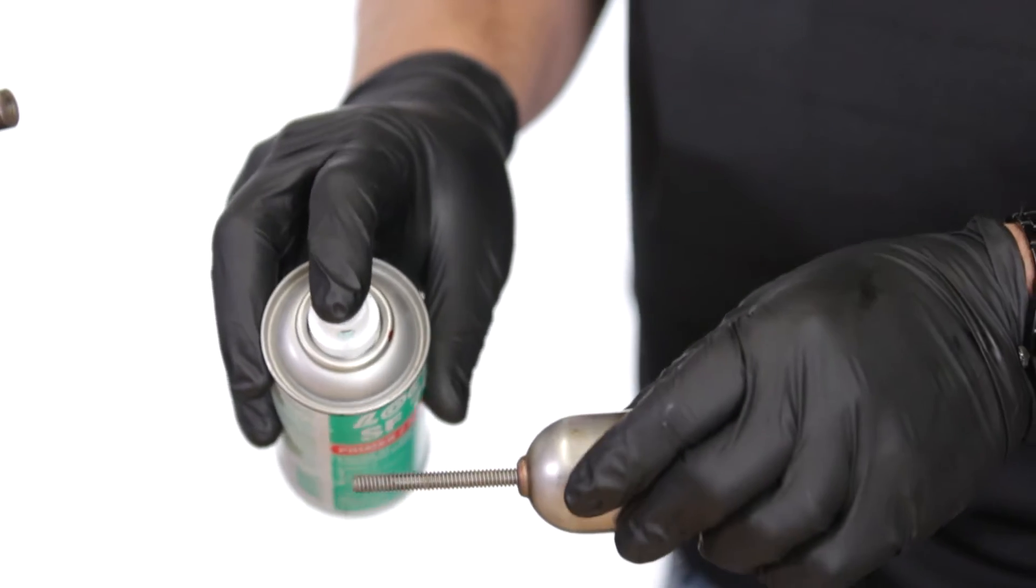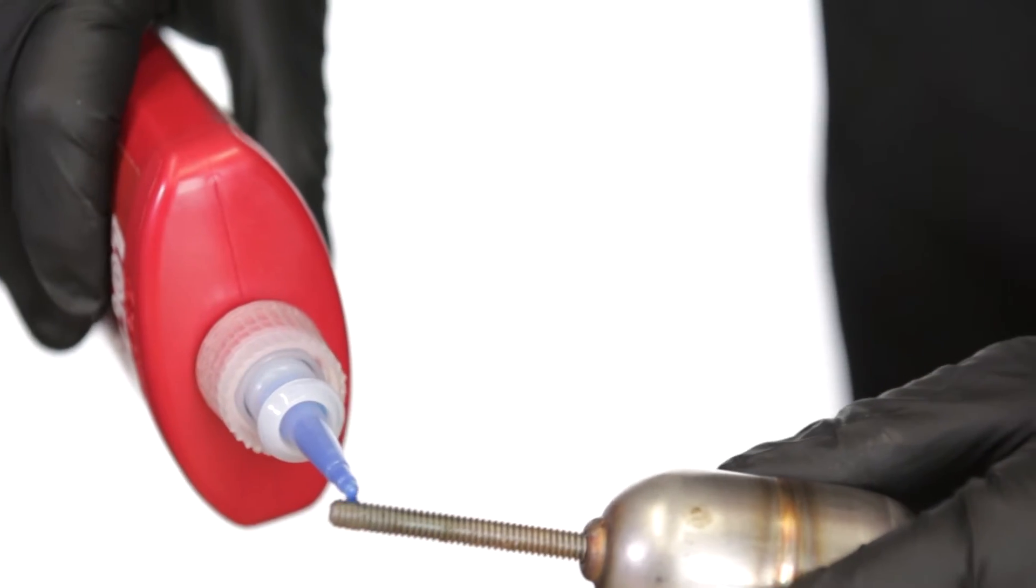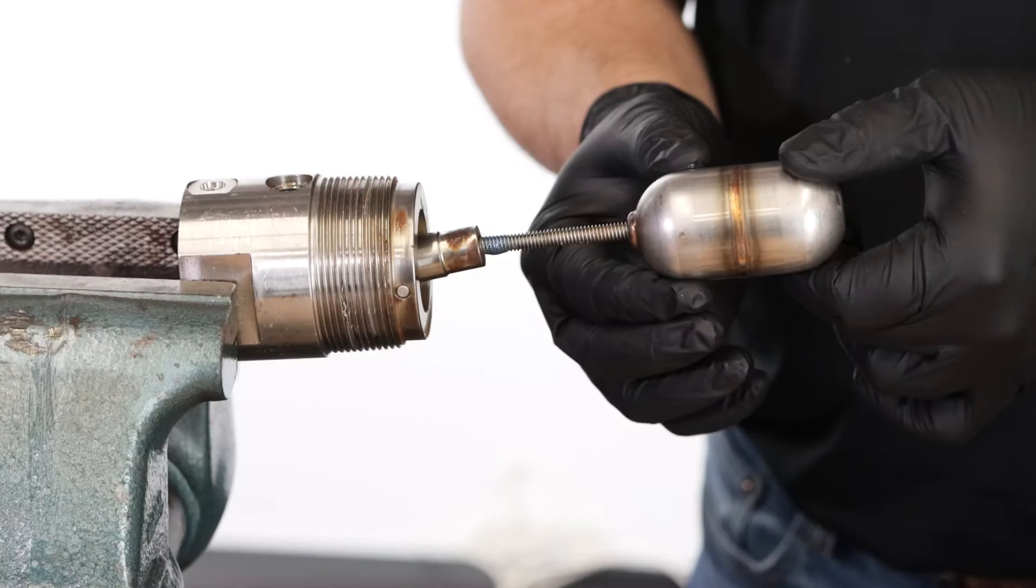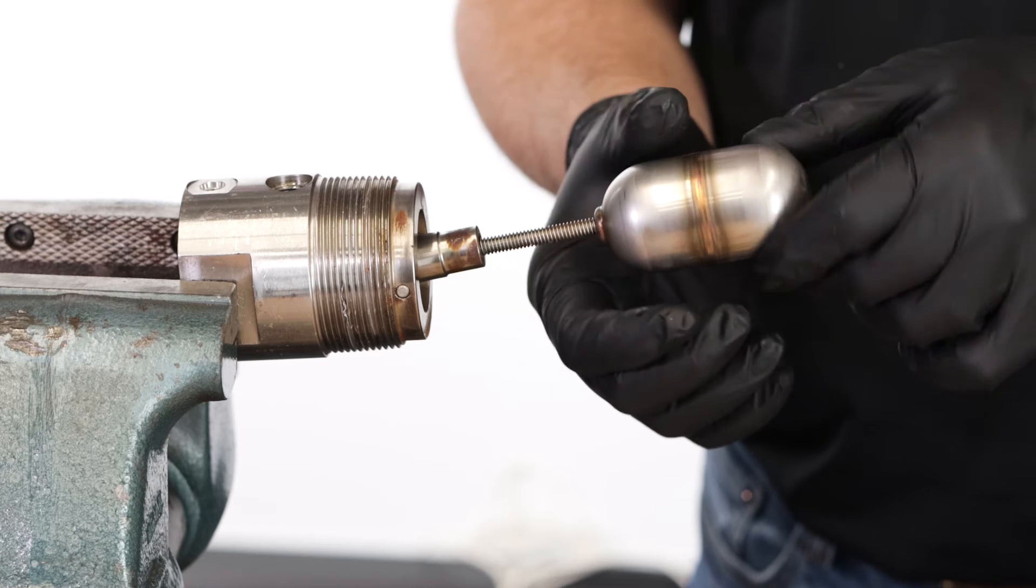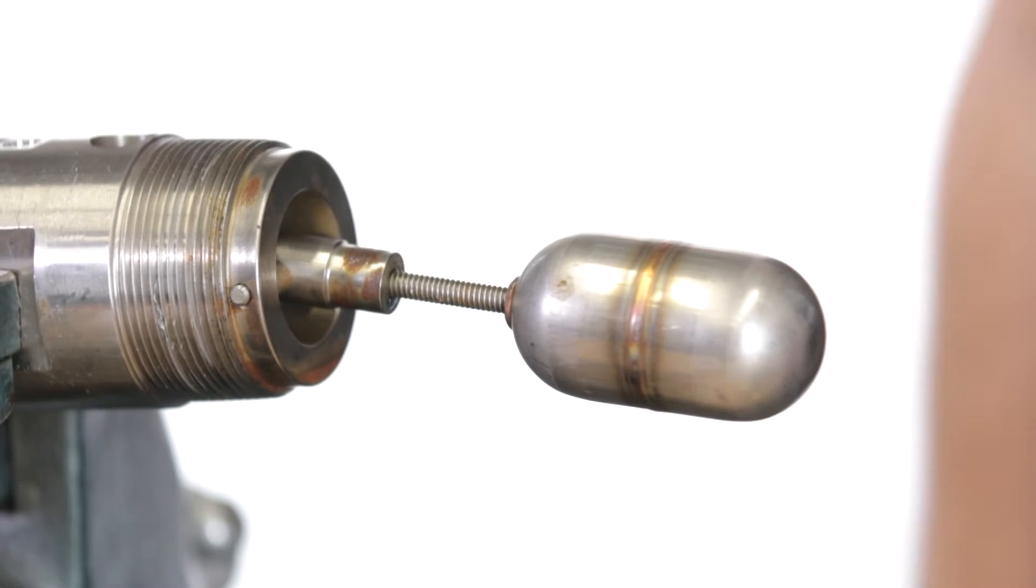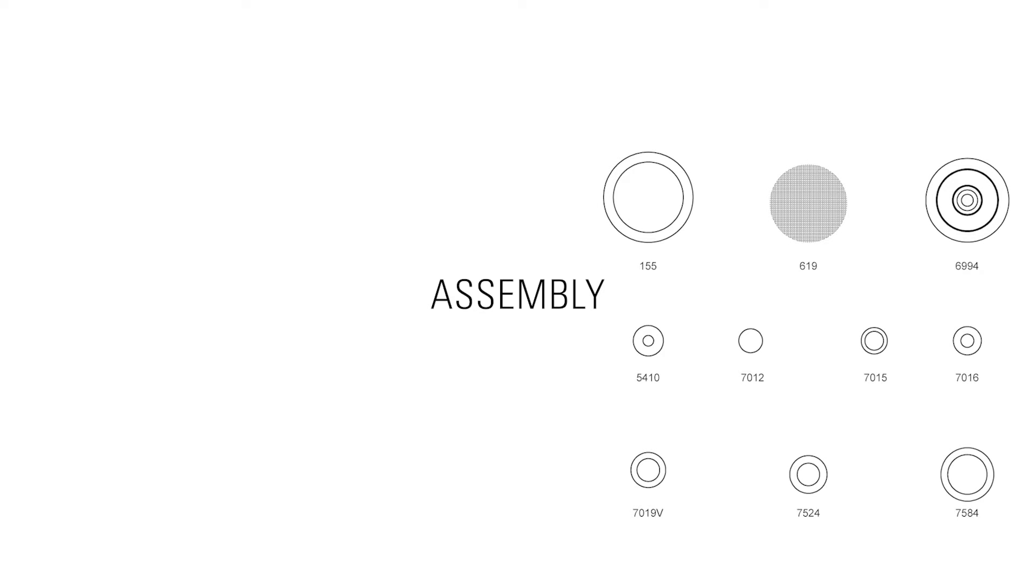If you've removed the float, use primer and Loctite when you reattach it on the threads. At this point, you can clean up your station, open your repair kit, and begin assembling.